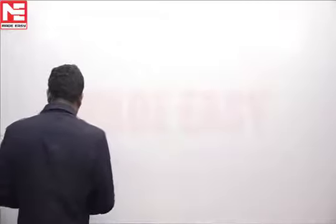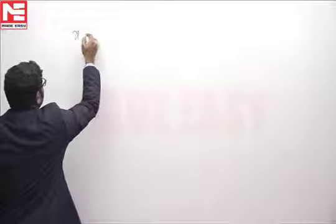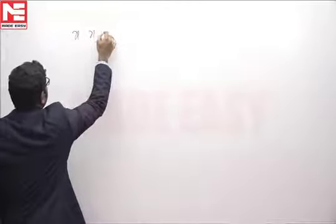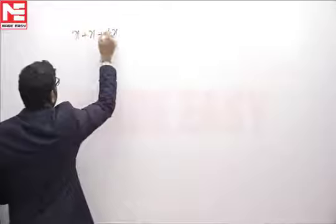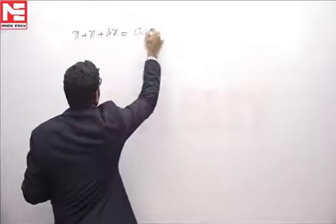Eigenvalues are in the ratio of 1 is to 1 is to 4, that is why I am taking one eigenvalue x, another eigenvalue x, another eigenvalue 4x. x plus x plus 4x equal to trace. Here trace is equal to A plus 6.